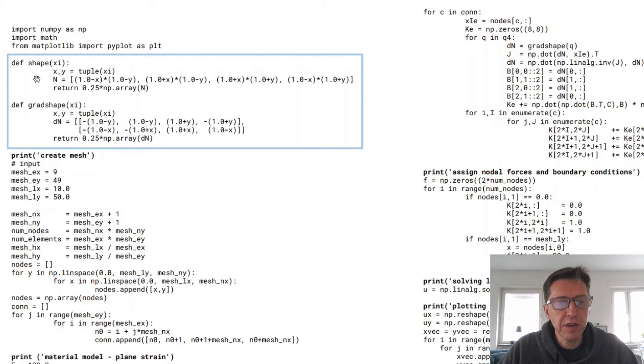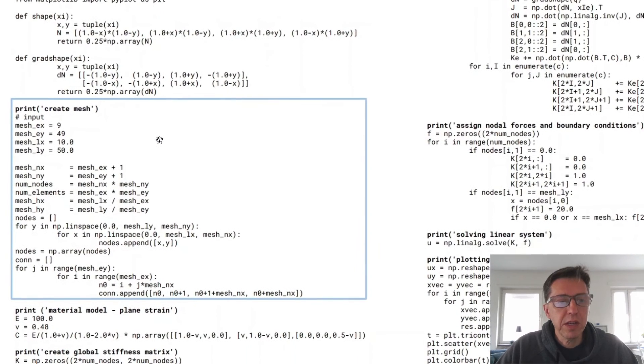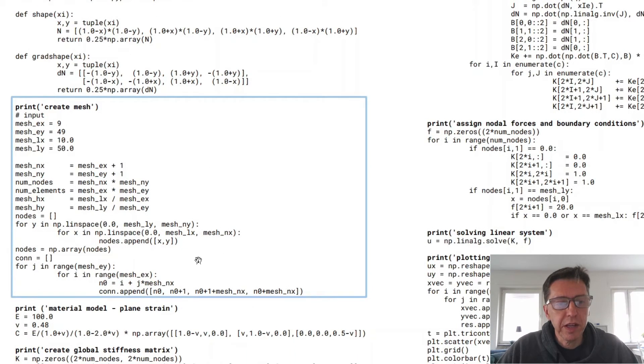There are two function definitions. There's a shape function and the gradient of the shape function here. And then we have a meshing part. This is where we create the finite element mesh. There's some inputs here. How many elements do we want? How many in x and y directions? And then how big is this block that we're simulating? And then the rest just assigns elements to that.